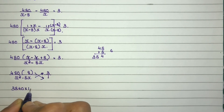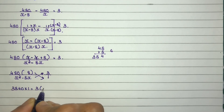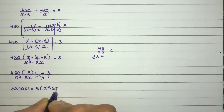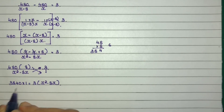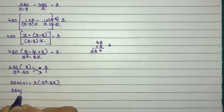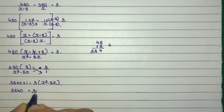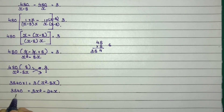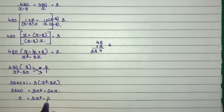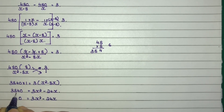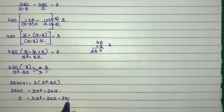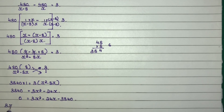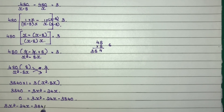Cross multiplying: 3840 equals 3 times (x squared minus 8x), which gives 3840 equals 3x squared minus 24x. Rearranging: 3x squared minus 24x minus 3840 equals 0.